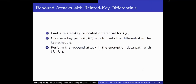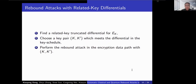To adopt related-key differentials in the rebound attack, there are three steps. First, find a related-key differential trail for each key. Second, choose a key pair that meets the differential of the key schedule. Third, perform the rebound attack with that key pair.